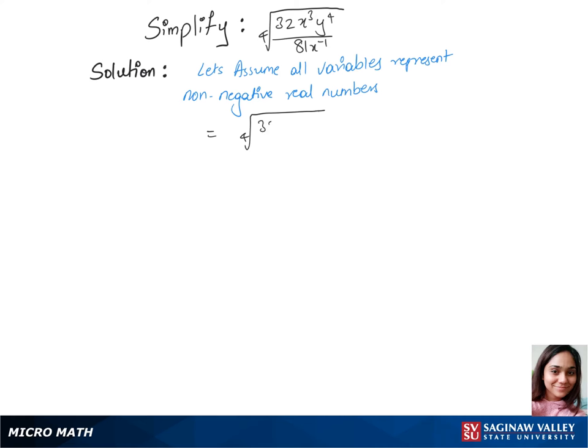We'll write our first step, which is 4th root of 32 times, we can write x power 4, since we have x cube over x power minus 1, times y power 4 over 81.